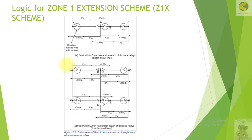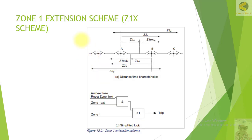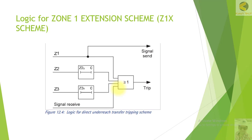This diagram shows Station A and Station B: normal Zone 1A is up to 80% and the extension zone is up to 120%. Similarly for Station B, Zone 1 is 80% and extension is 120%. The trip logic shows that if there is a fault in Zone 2, tripping is immediate; and if there is a fault in Zone 1 extension with no auto-reclose reset available, tripping is also instantaneous. This is the simplified logic for Zone 1 extension.